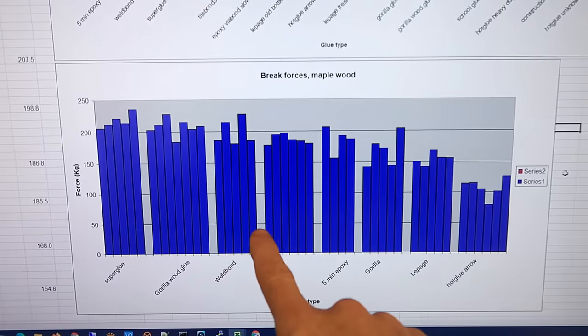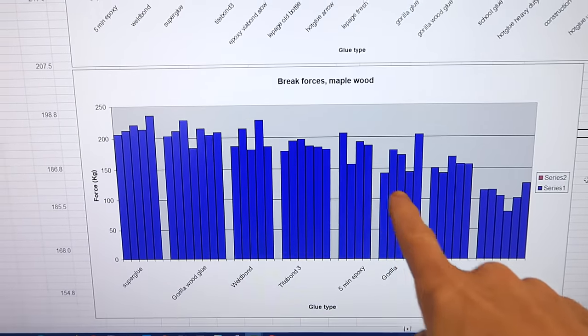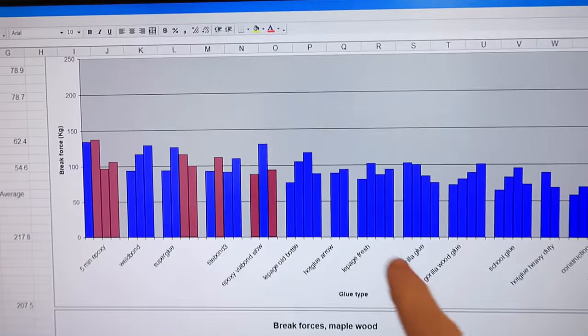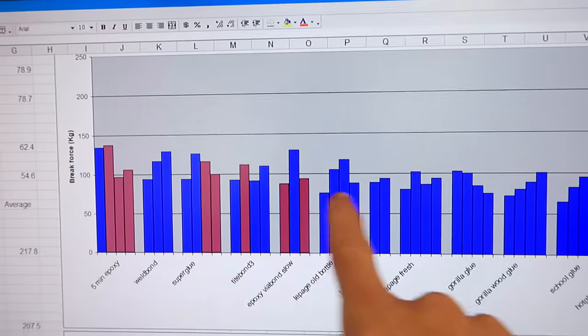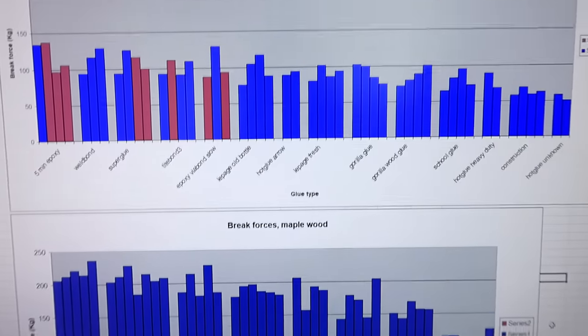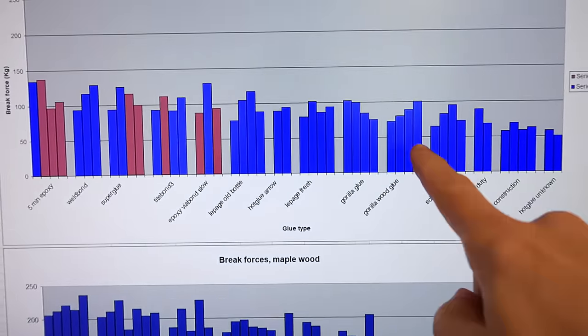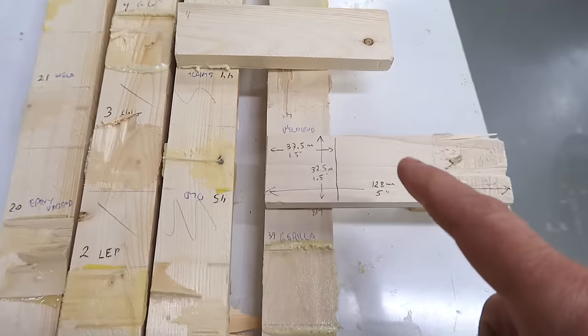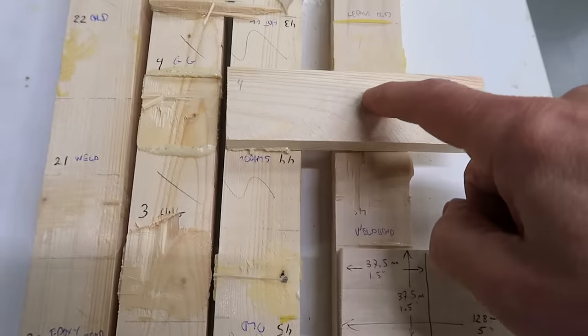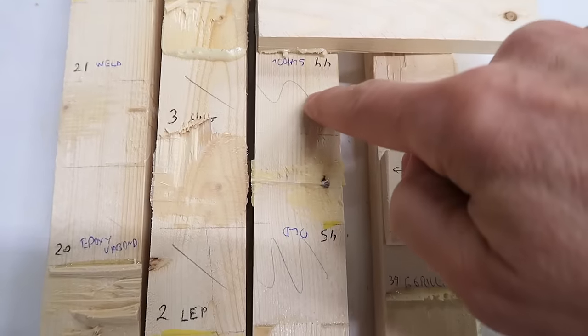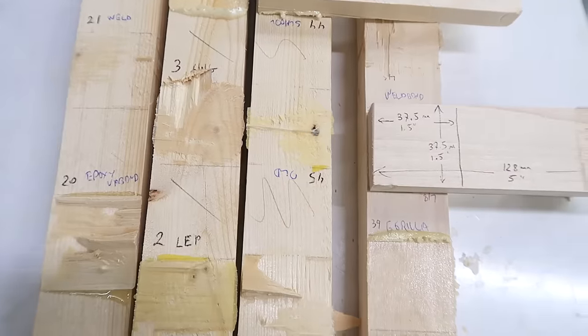And here's my results with the maple. The breaking forces were substantially higher than what I had with the softwood. This is on the same scale. Even the glues, where mostly the glue failed, seemed to do better with the hardwood. And this is using the same geometry as I had used for the softwood, and the softwood surface was actually pretty rough and fresh cut.